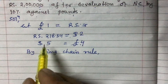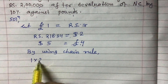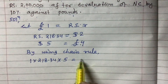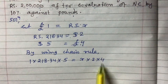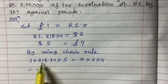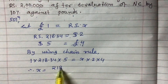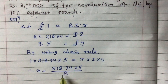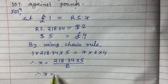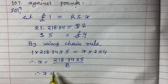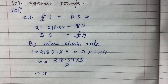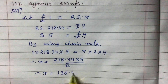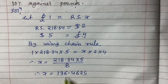According to the chain rule, the product of the left side always equals the product of the right side. So: 1 × 218.34 × 5 = x × 2 × 4. Therefore, x equals 218.34 × 5 divided by 8.